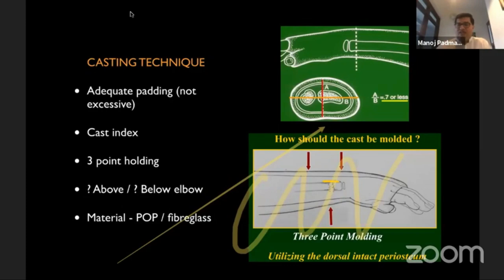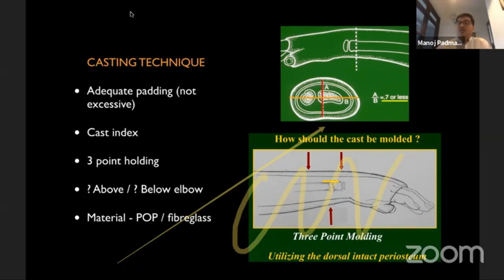Casting technique — this applies for both physeal as well as metaphyseal fractures. Adequate padding is important, not excessive. Cast index is important: it's the anteroposterior diameter divided by the medial-lateral diameter. Essentially, you want your cast to look more oval rather than a perfect circle so that you get a good interosseous mold. Three-point molding is important. Dorsally displaced fractures have very little soft tissue so you can mold over the bone; volar displaced fractures have a lot of soft tissue and are slightly trickier. There is much debate about above-elbow versus below-elbow casting, but plenty of evidence shows that below-elbow casting is more than adequate. It helps with activities of daily living, is more comfortable, and well tolerated. If the child is not cooperative or the family cannot manage, go for an above-elbow cast — but evidence supports below-elbow cast for both physeal and metaphyseal fractures.